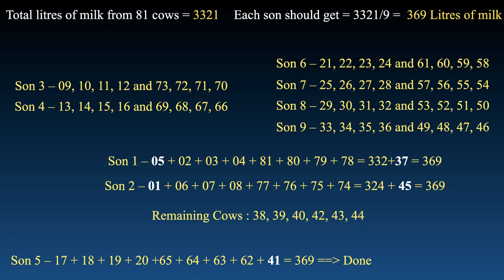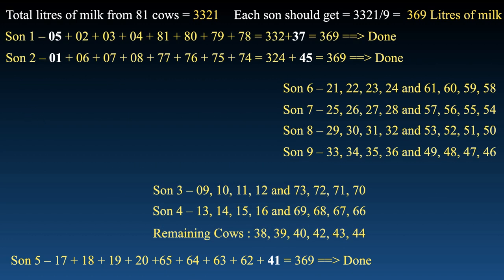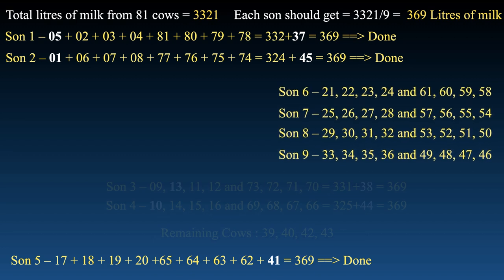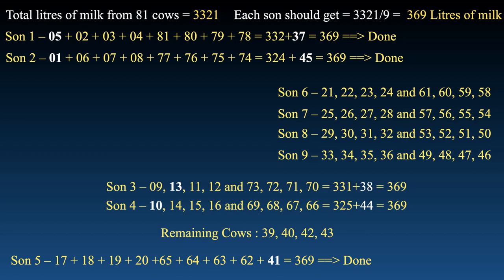For sons 3 and 4, each is 41 short, but we only have cows ±3, ±2, and ±1 away from 41. Using ±3: give cow 38 to son 3 — he is now three short. Swap a cow with a difference of three. Give cow 10 from son 3 and swap with cow 13 from son 4. Son 3 is now sorted, and the only option for son 4 is cow 44. This pair is also sorted.